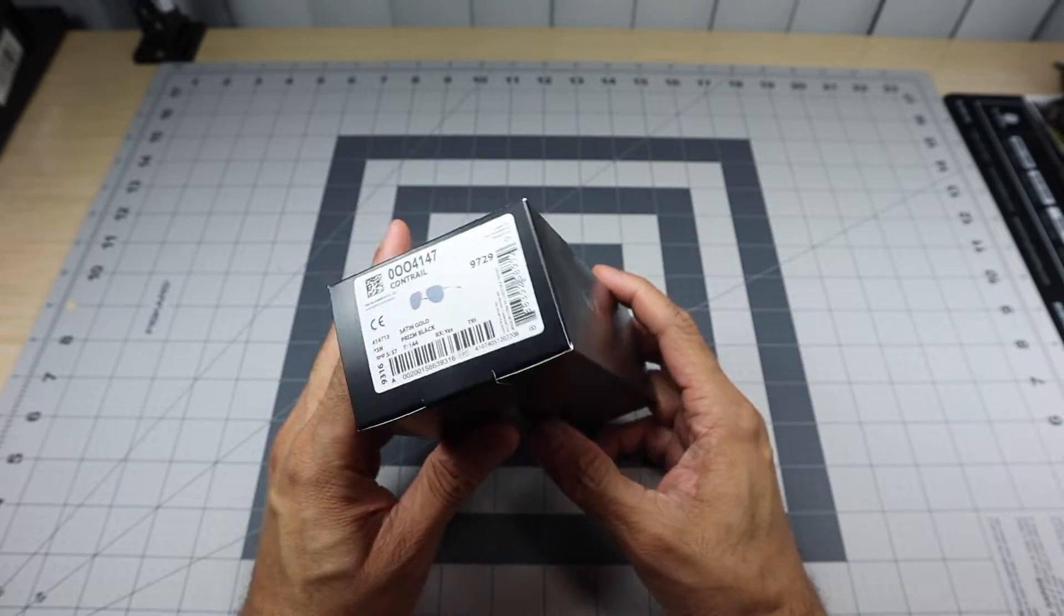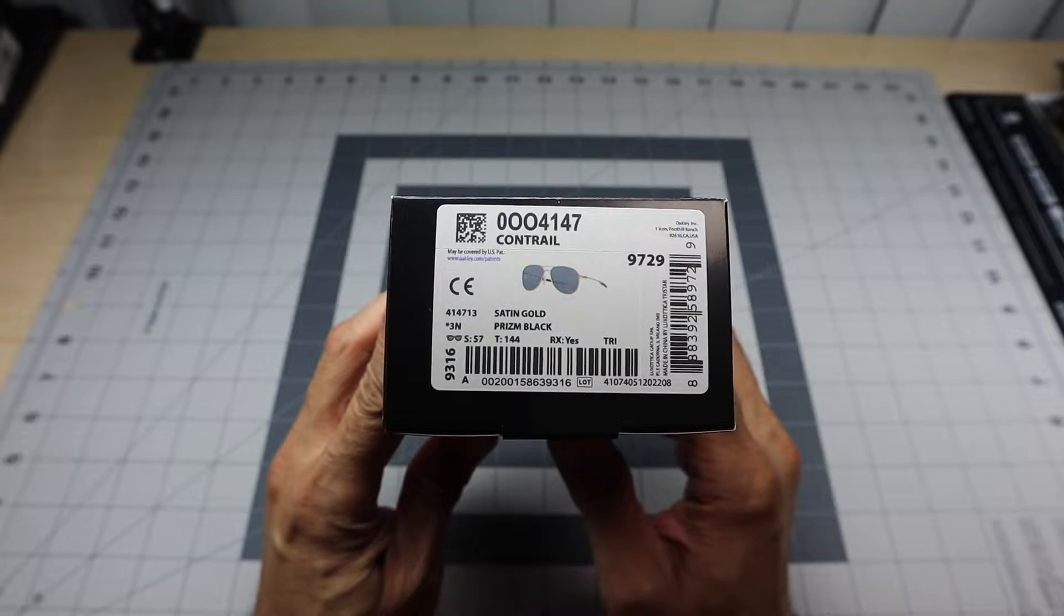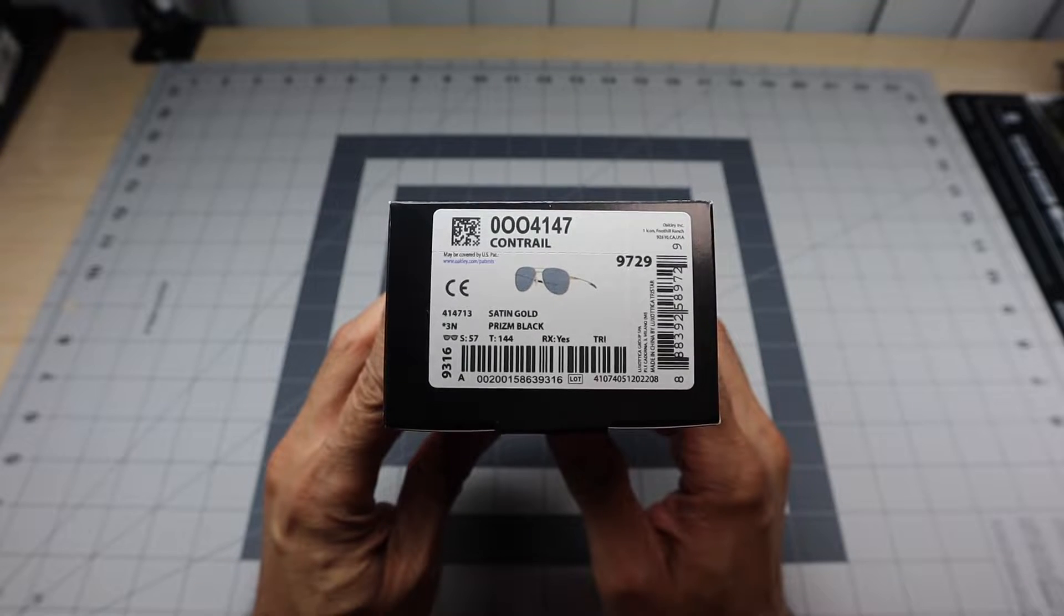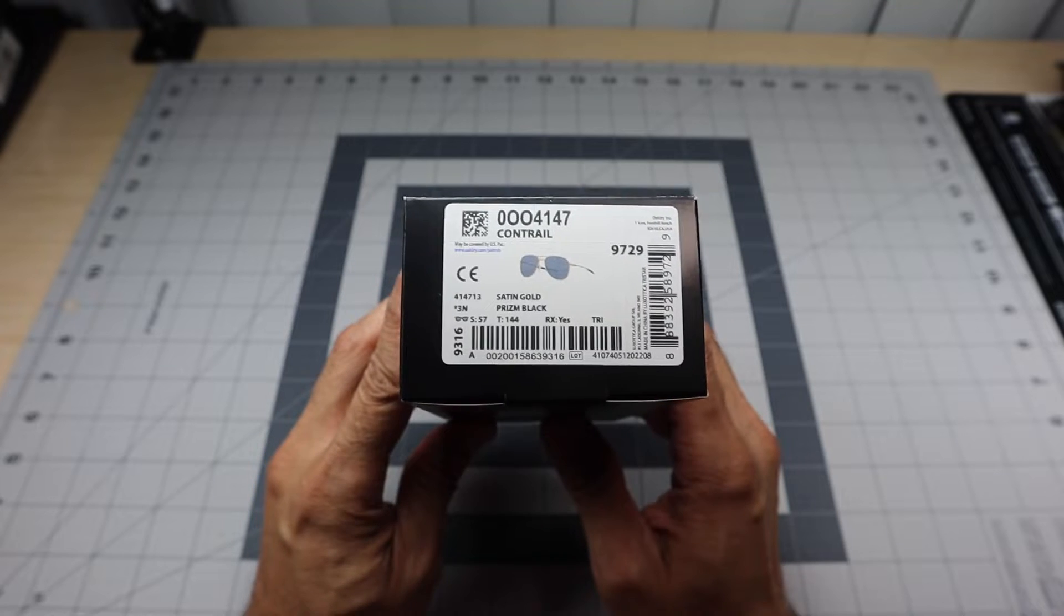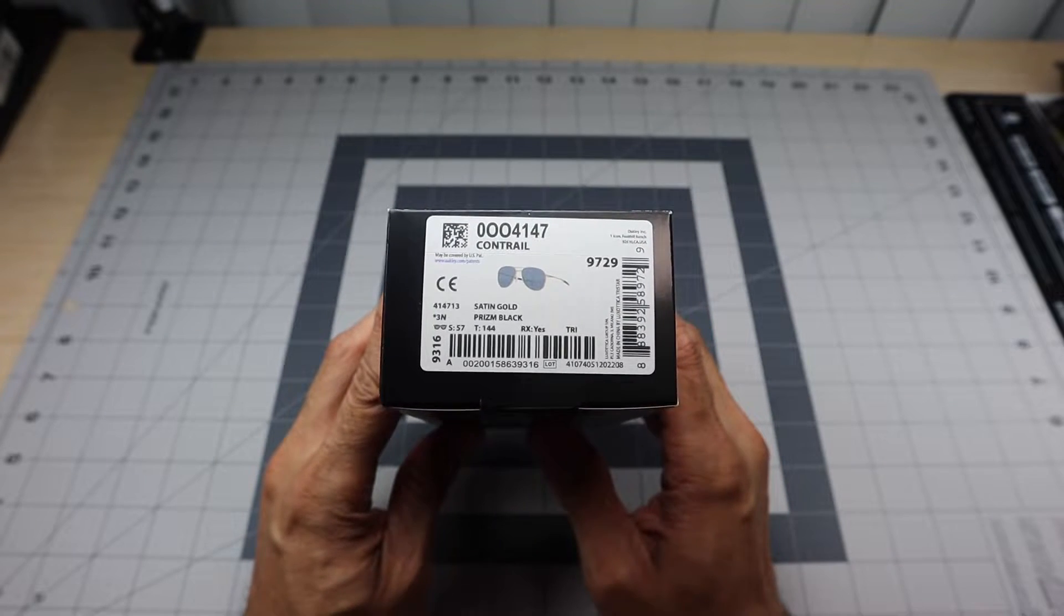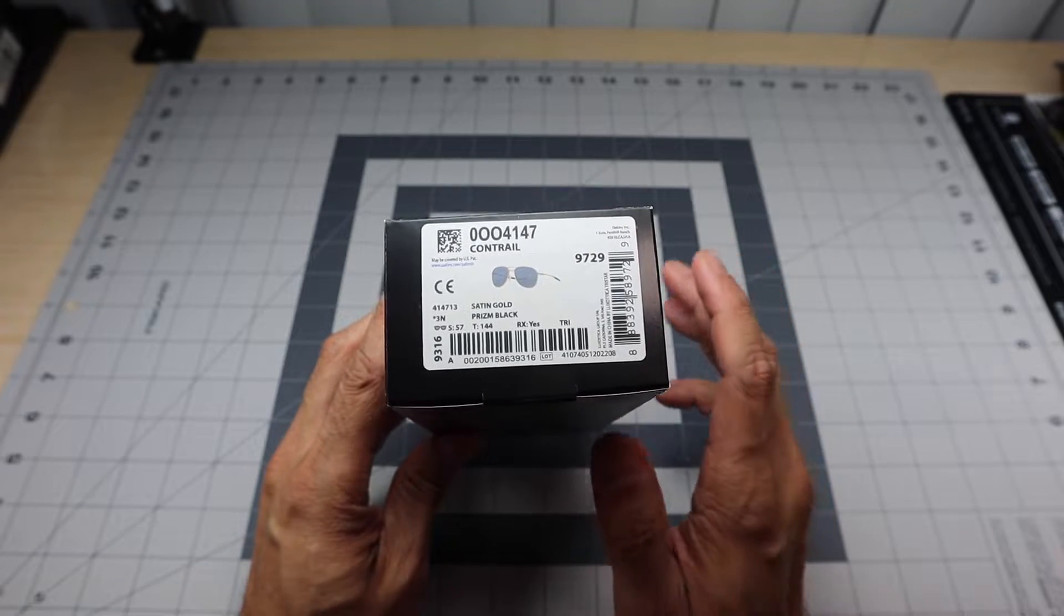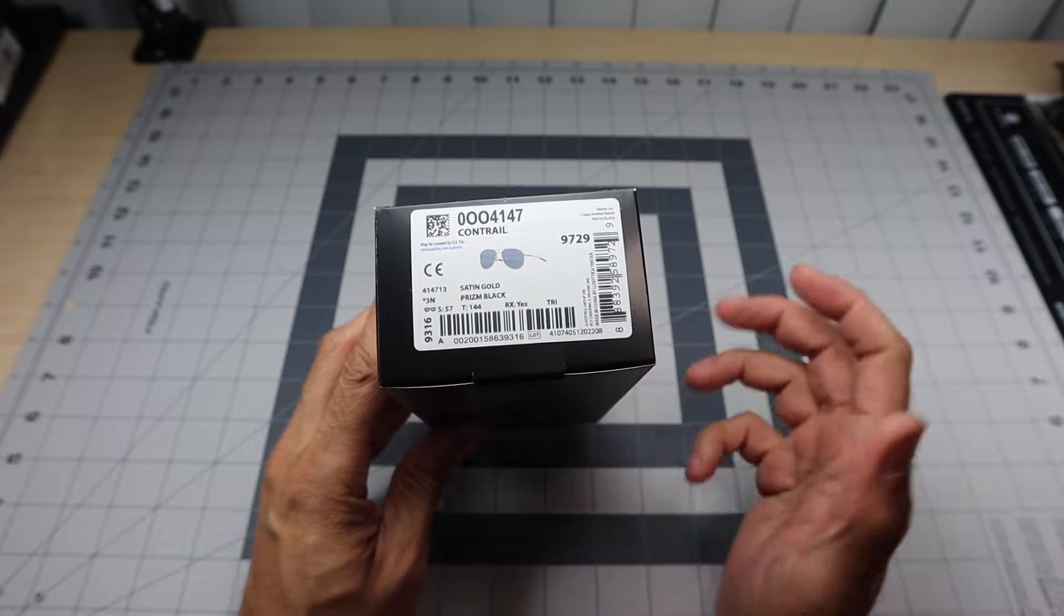I'll go ahead and show them to you guys. This is the Oakley Contrail. This particular one is in the satin gold frame with the prism black lenses. This is only available on Standard Issue right now. Hopefully they will start carrying this particular color in the stores because I think it is a great example of what this model is modeled after.